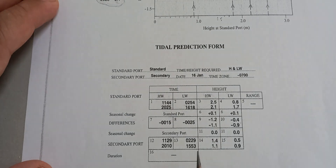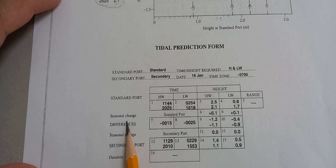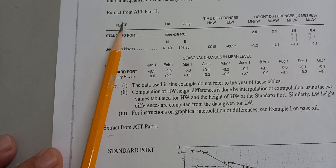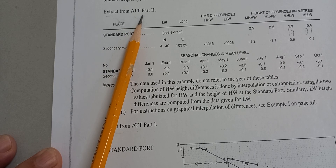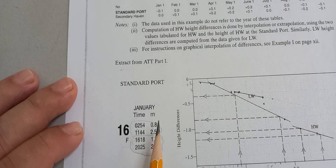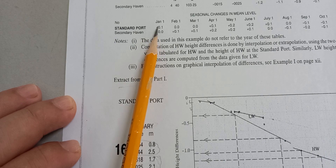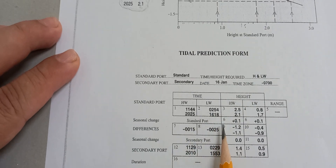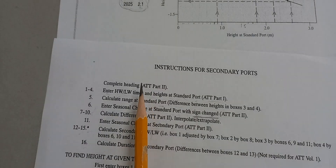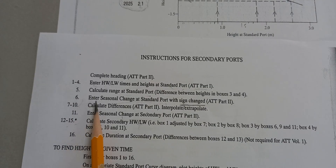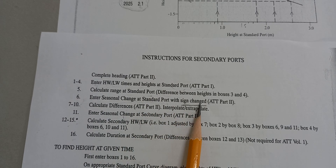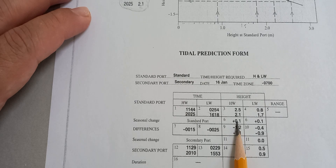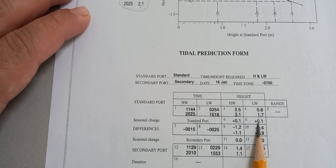Now let's go to the seasonal change for the standard port. You can find it in the Admiralty Tide Tables, Part 2. Since it is January, the seasonal change for the standard port is negative 0.1. However, per the instruction for secondary port in number 6, you enter the seasonal change with sign change, so the negative becomes positive 0.1.